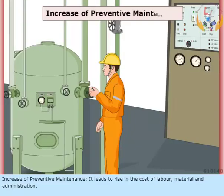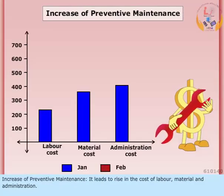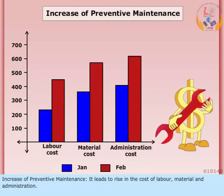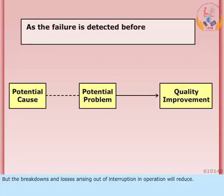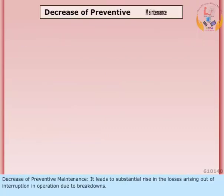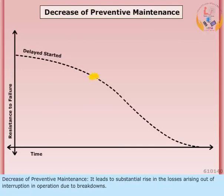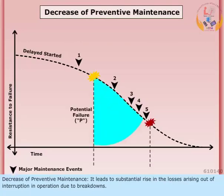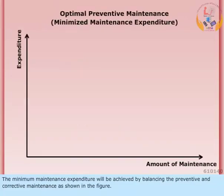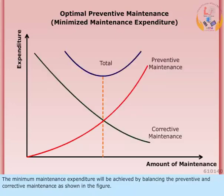An increase of preventive maintenance leads to a rise in the cost of labor, material, and administration. But the breakdowns and losses arising out of interruption in operation will reduce. Conversely, a decrease of preventive maintenance leads to a substantial rise in losses from interruptions in operation due to breakdowns. The minimum maintenance expenditure will be achieved by balancing preventive and corrective maintenance, as shown in the figure.